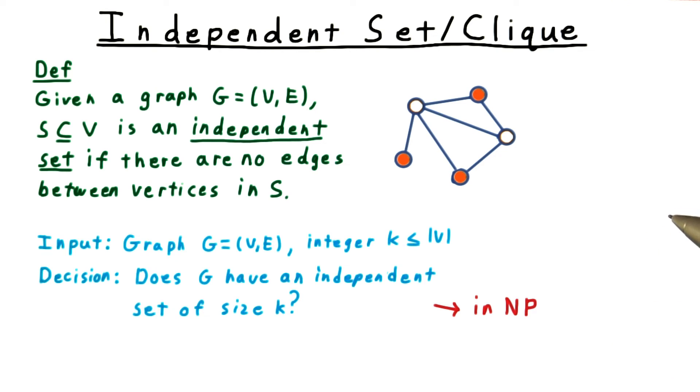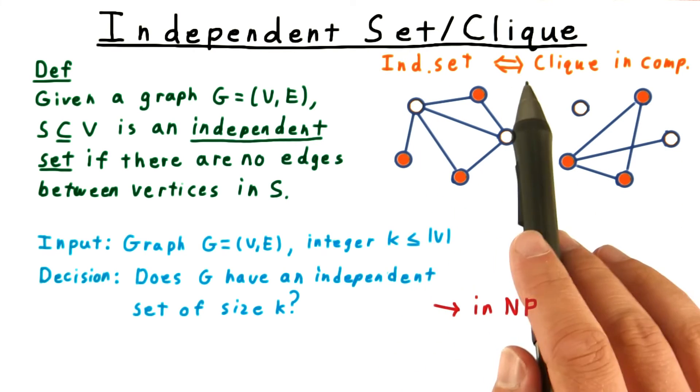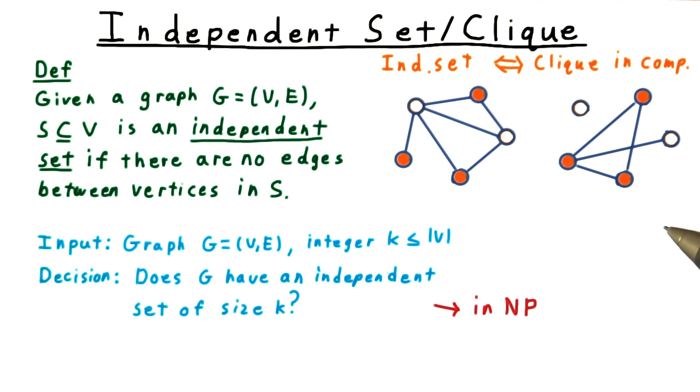This problem is so close to the clique problem that the two are usually considered as one. A set is independent in a graph if and only if it is a clique in the complement graph.